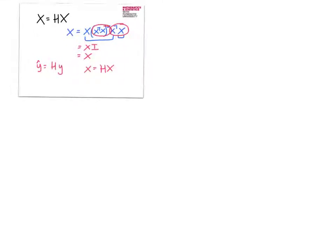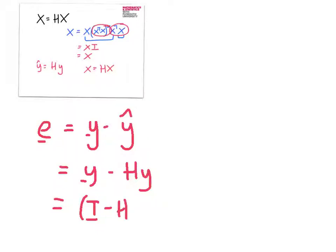Let's have a quick look at the residuals. If we say the residuals are equal to y vector minus y hat. And we've said that this is y minus hat y. Well, that's a simple factorization. Identity matrix minus the hat multiplied by y.